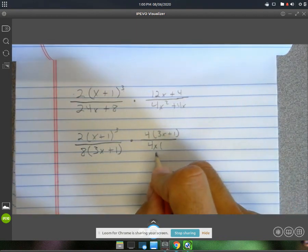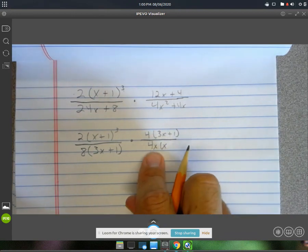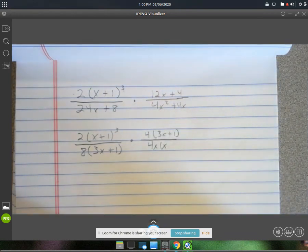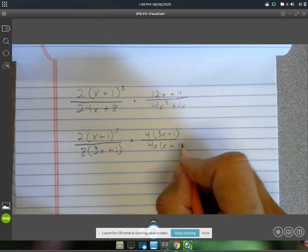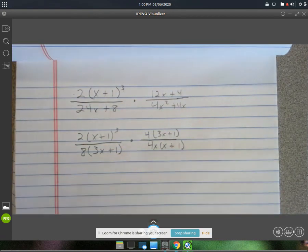Alright, that's going to leave us with an x. You know, 4x times x gives you 4x squared. And then 4x times 1.